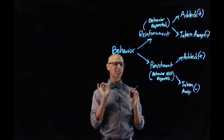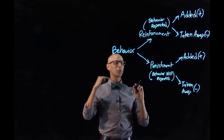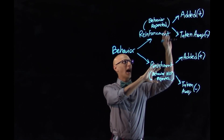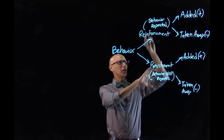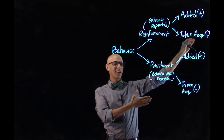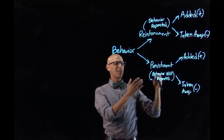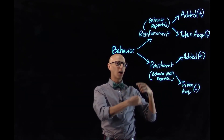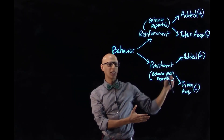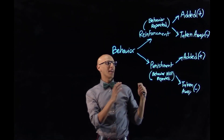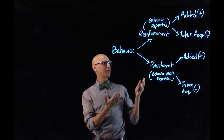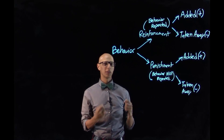So remember: whenever you're given a scenario, ask yourself, is the behavior likely to repeat? If so, it's reinforcement. Then ask yourself, was something added or taken away for that behavior to repeat? If something was added, it's positive reinforcement. If something was taken away, it's negative reinforcement. Same with punishment — if the behavior is likely to decrease or not be repeated, it's punishment. Then ask, was something added or taken away for the behavior to not be repeated? That is operant conditioning. It's a tricky concept, but if you think of it this way, this should hopefully help you out.